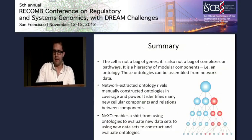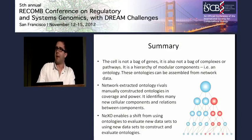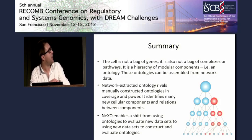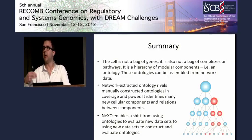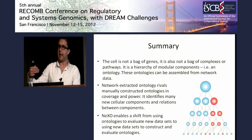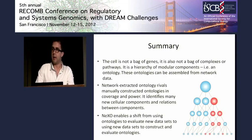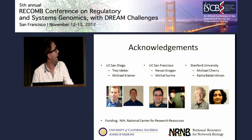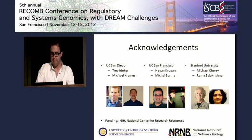In summary: the cell is not a bag of genes, nor a bag of pathways or complexes — it is a hierarchy, pretty well represented by ontologies that we can now extract from data. These ontologies rival GO in power for identifying functional relationships, and we can now construct and refine ontologies automatically using new data sets to systematically work toward a better, more complete cellular model. I'd like to thank Trey Ideker, my postdoc mentor, Michael Kramer, Nevan Krogan, Michael Surma, and Michael Cherry and Rama Krishna, who helped us work with GO editors to change GO using data.